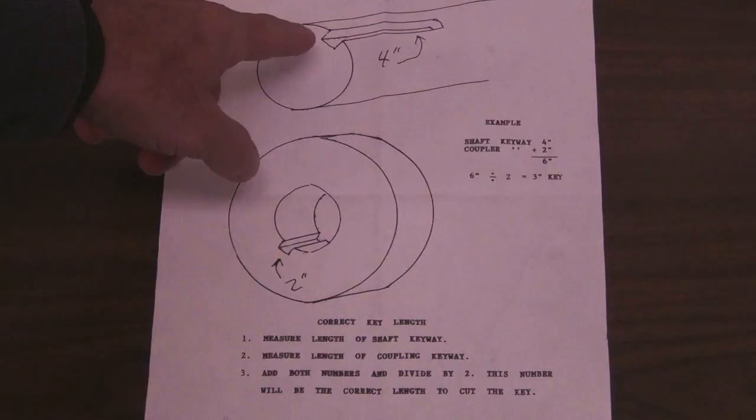So in this example we have a four inch keyway on our motor shaft and a two inch keyway on the coupler. Four and two is six, six divided by two is three, the correct length of key for this setup would be three inches.